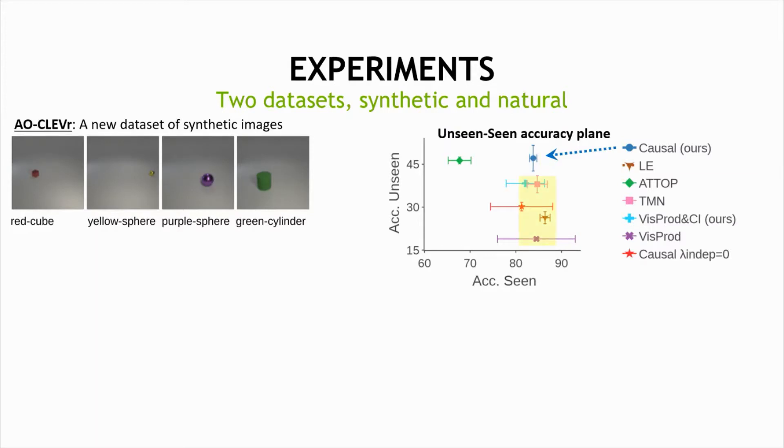Importantly, this comparison reveals that encouraging the conditional independence relations largely improves the unseen accuracy without hurting much the seen accuracy. Specifically, we observe large improvements when comparing a baseline without conditional independence to our full causal approach. We also observe this when comparing VisProd, which is a simple discriminative model, to a similar variant that is regularized by the same conditional independence relations.